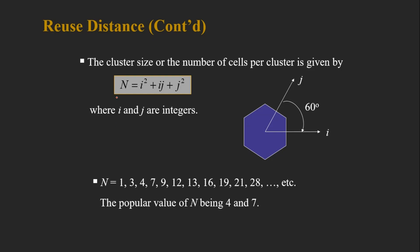You may wonder why the cluster size is seven and not some other number. For a hexagonal geometry, the cluster size N is given by N = i² + ij + j², where i and j are non-negative integers. For example, i=0, j=1 gives N=1; i=1, j=1 gives N = 1+1+1 = 3; i=1, j=2 gives another valid cluster size. This equation produces the set of valid cluster sizes.